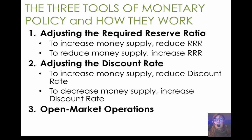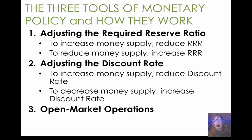The second tool is adjusting the discount rate. Banks can borrow from the Fed if they need to. Adjusting the discount rate means the Fed charges more or less to banks when they need to borrow money from the Fed to meet their required reserve ratio. To discourage banks from loaning too much and coming up short on reserves, the Fed will increase the discount rate to decrease the money supply. To increase the money supply, they reduce the discount rate, lowering the penalty banks pay if they've loaned out too much and need to borrow from the Fed.